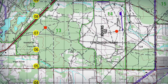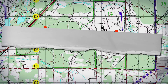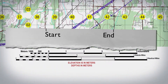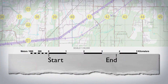Line up the straight edge of a strip of paper with the two known points on the map and make tick marks at the start and end points. Place the start point marked on the paper strip under the zero on the bar scale. Next, make another tick mark to the nearest 1000 meters. In this example, make the new mark at 4000 meters.